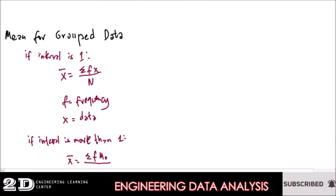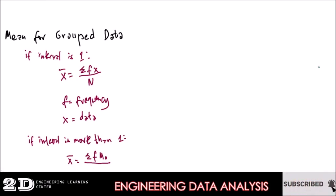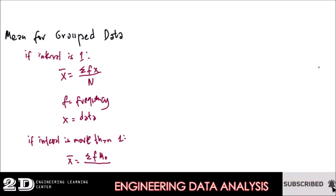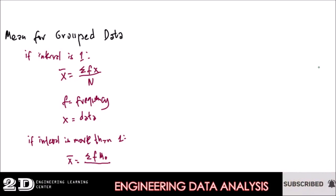For grouped data, it is much more tedious and laborious to compute because we are going to present our data in a frequency distribution table. It is advisable that if your data has more than 30 values, you should present them in a frequency distribution table.